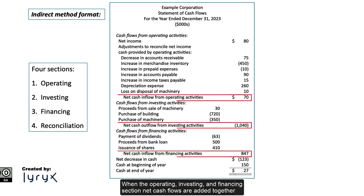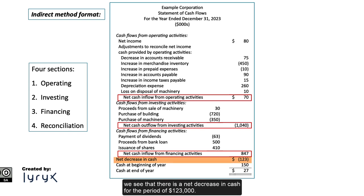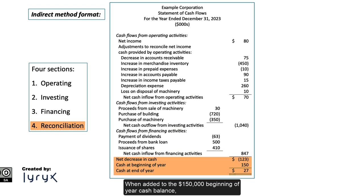When the operating, investing, and financing section net cash flows are added together, we see that there is a net decrease in cash for the period of $123,000, meaning the company used up that amount of cash in the period. When added to the $150,000 beginning-of-year cash balance, we end up with the ending cash balance for the year of $27,000.